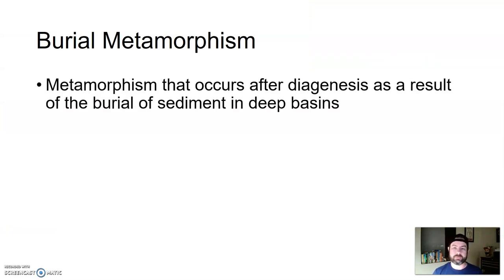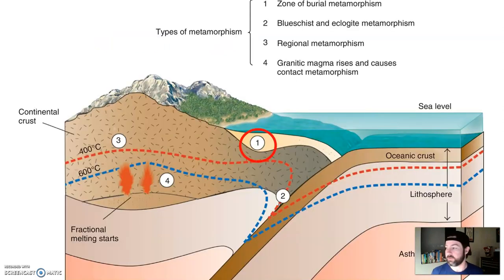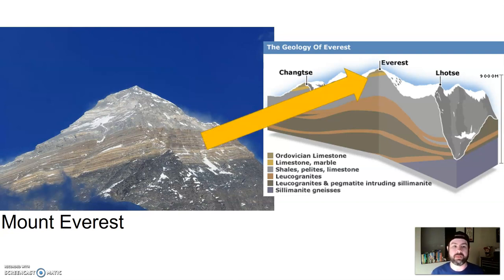Burial metamorphism is metamorphism that occurs after diagenesis as a result of the burial of sediment in deep basins. As material continues to build up, below you'll get sedimentary rocks starting to form through lithification. But just below that, a little bit deeper, things will start to metamorphose. This is typically a lower-grade metamorphism, and you'll find these in areas of other sedimentary rock, just below the region of diagenesis.